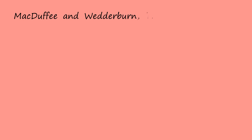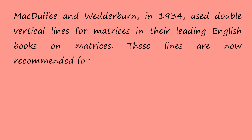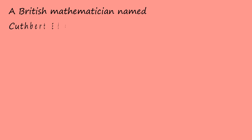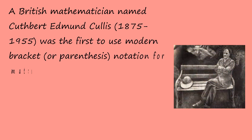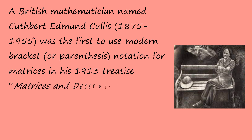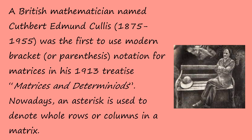McDuffie and Wederbund used double vertical lines for matrices in their leading English books on matrices. These lines are now recommended for matrix norms. A British mathematician, Hedman Collis, was the first to use modern bracket or parentheses notation for matrices. Nowadays, an asterisk is used to denote whole rows or columns in a matrix.